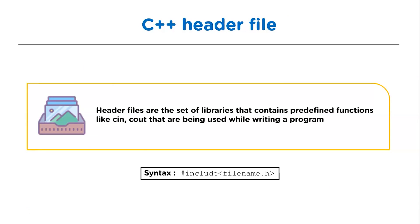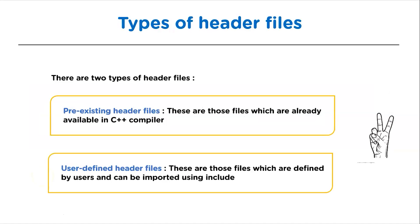Header files are the set of libraries that contain predefined functions at a common place. They basically store the declarations at one common place and they are being used while writing a program. These header files usually have a .h extension and we use #include before writing the header file to inform the preprocessor that we are including this header file.